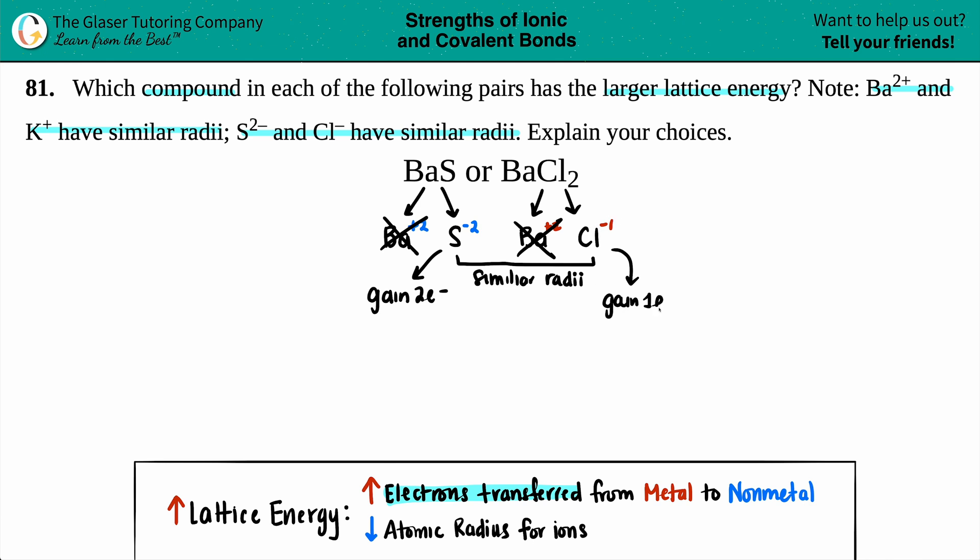In order to increase that lattice energy, you want more electrons that are transferred from the metal to the non-metal. So the sulfur gained two electrons from the metal, and chlorine gained one from the metal, but two is better than one.